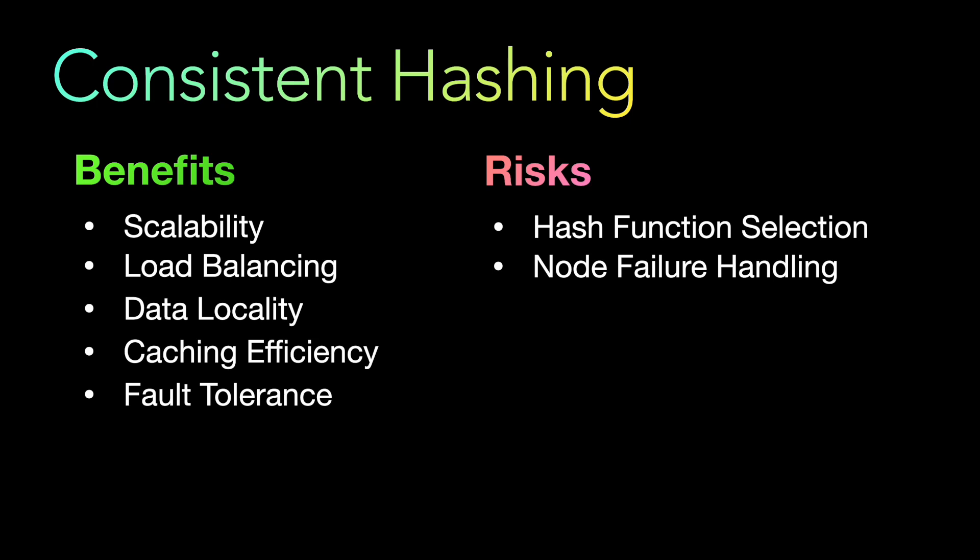Node failure handling is another risk. While consistent hashing provides fault tolerance by redistributing data upon node failures, the process of redistributing data can introduce temporary performance degradation or increased network traffic. If a node fails and its responsibility is reassigned to other nodes, the sudden increase in data reassignment to those nodes can strain their resources and impact system performance.